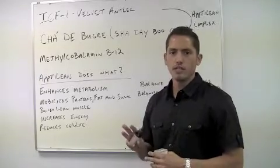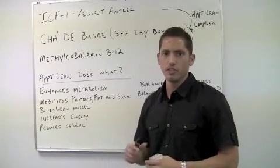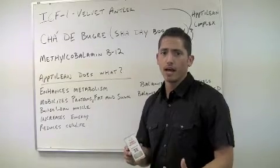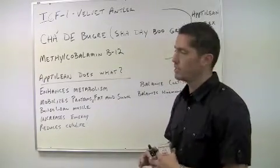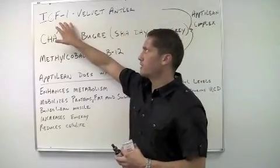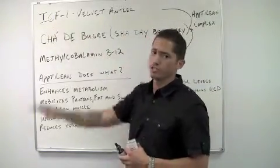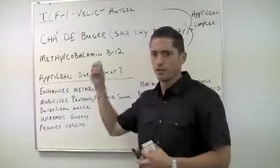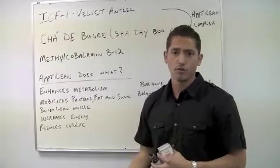So jumping right in, there are three key components within the HCG enhancer that are going to amplify the effects of the diet. What those three key ingredients are, are velvet antler extract. Velvet antler extract is very nutrient rich in IGF-1. If you've watched the other trainings, you know that velvet antler is rich in IGF-1.